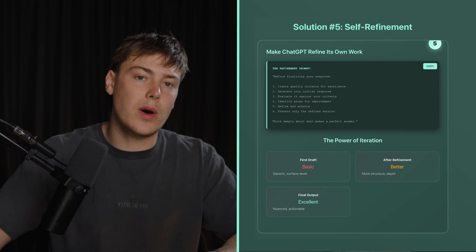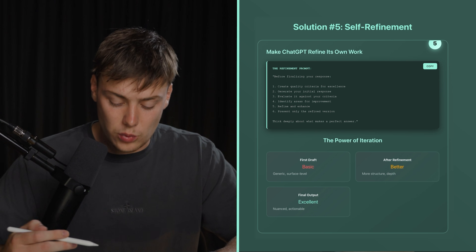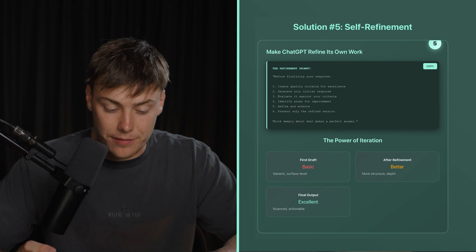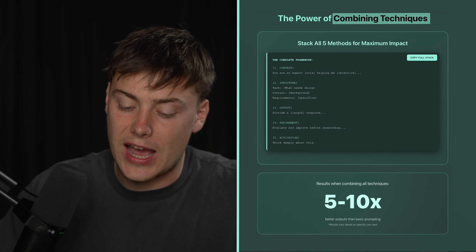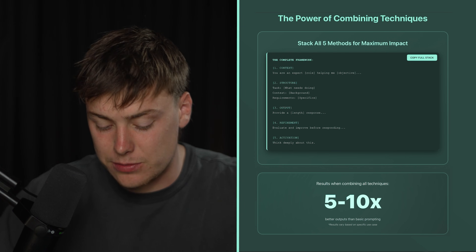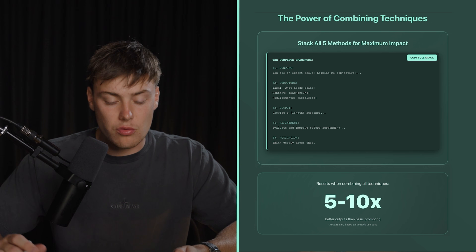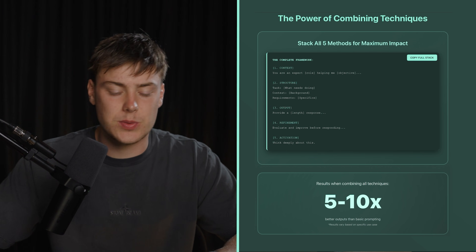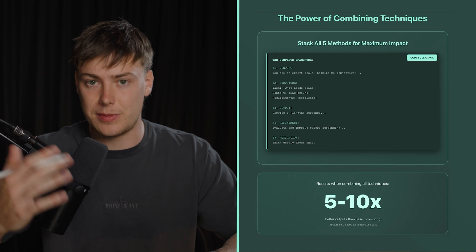If you're just going to use one LLM, put in this refinement prompt to make GPT refine its own work. But if you want extra refinement, use two LLMs together. The most powerful outputs come if you stack all five of these methods together — this gives you the maximum impact. The complete ultimate prompting framework right now in 2025 probably won't change throughout 2026, but as we get new models we'll need to reassess.